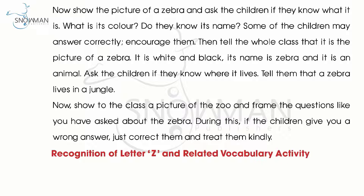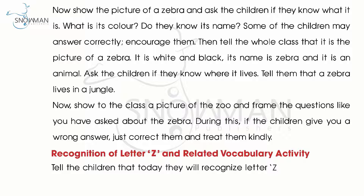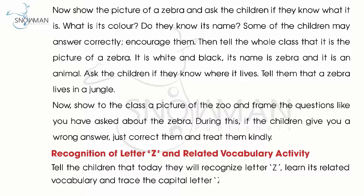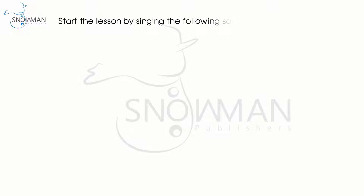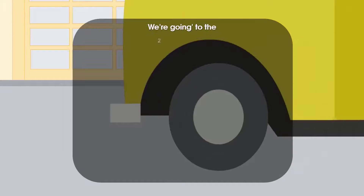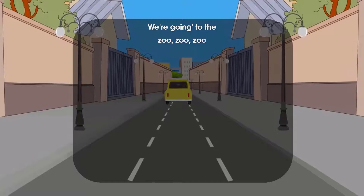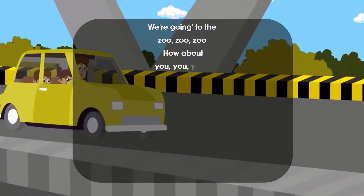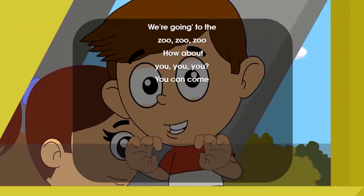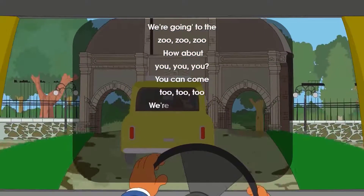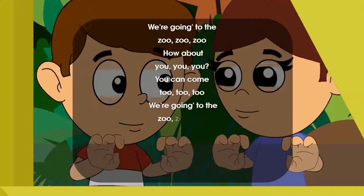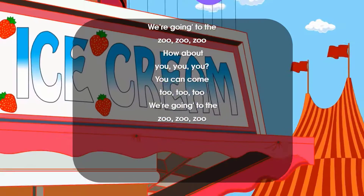Recognition of letter Z and related vocabulary activity: tell the children that today they will recognize letter Z, learn its related vocabulary, and trace the capital letter Z with correct formation. Start the lesson by singing the following song with the children: 'We're going to the zoo, zoo, zoo. How about you, you, you? You can come too, too, too. We're going to the zoo, zoo, zoo.'